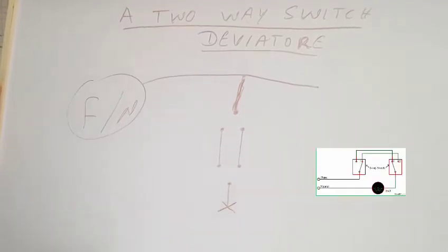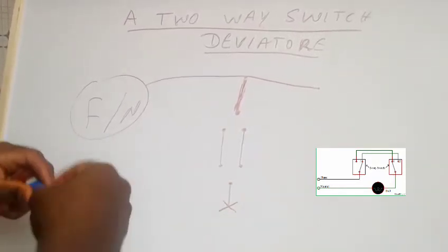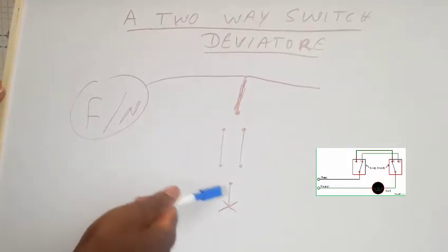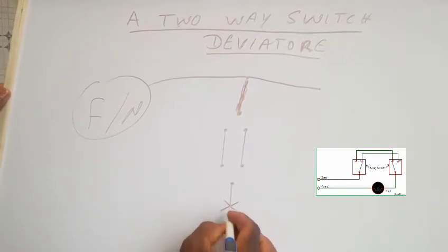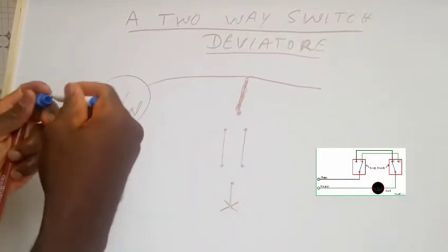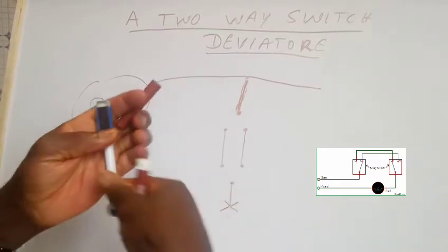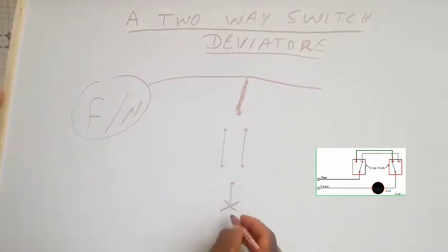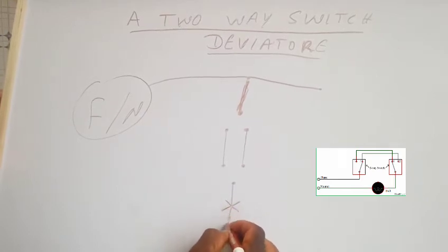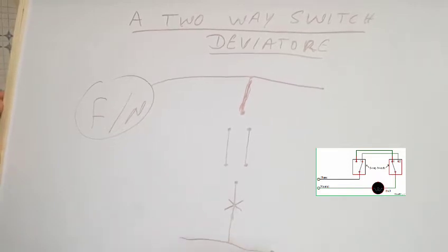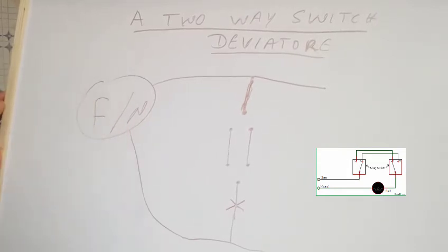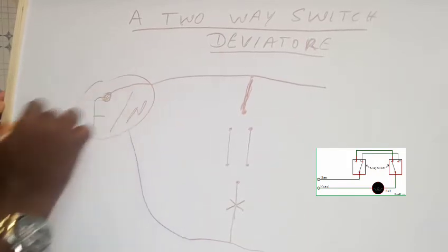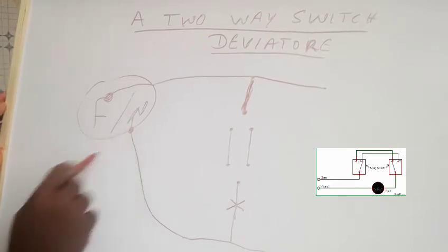Here is the lamp — your light bulb. From your light bulb you have your neutral wire. I wanted to use the blue color for it but my blue pen isn't writing anymore. You have your neutral wire, and that goes all the way back to the main power source. So here you have the phase (F) connected here and the neutral (N) connected here.